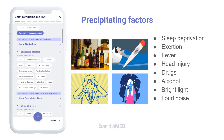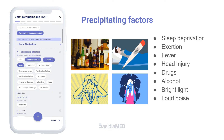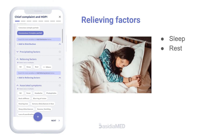Factors that precipitate sudden onset seizures include sleep deprivation, exertion, fever, head injury, drugs, alcohol, bright light, and loud noise, to name a few. Although most episodes of seizures will end spontaneously, some relieving factors observed by the patient may be sleep and rest.